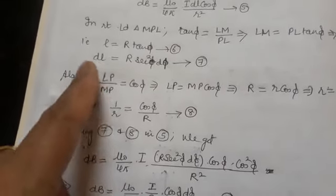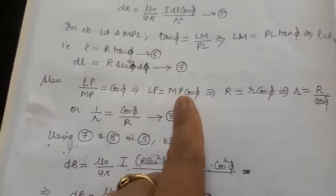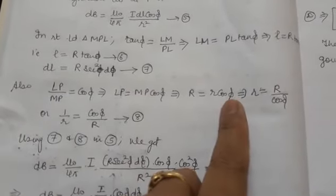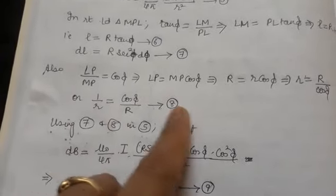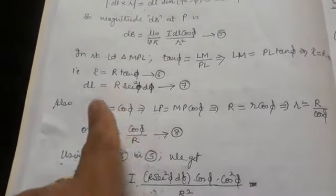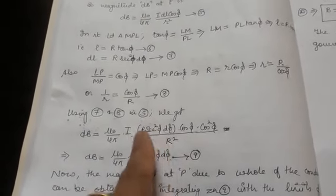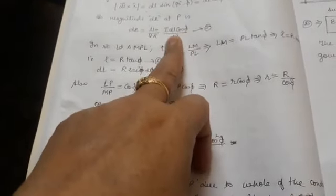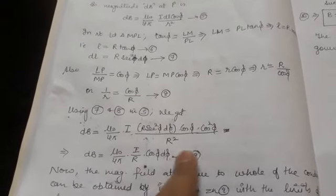Using the value of 1 upon r (equation 8) and DL (equation 7) in equation 5, I get dB equals mu-naught upon 4 pi times I times R secant-squared phi D phi times cos phi times cos-squared phi upon R-squared. Secant-squared phi cancels with cos-squared phi, and one factor of R cancels, giving equation number 9.